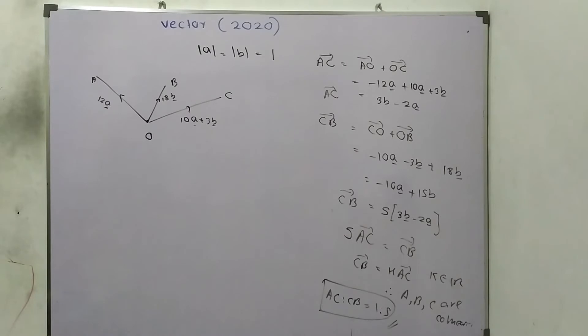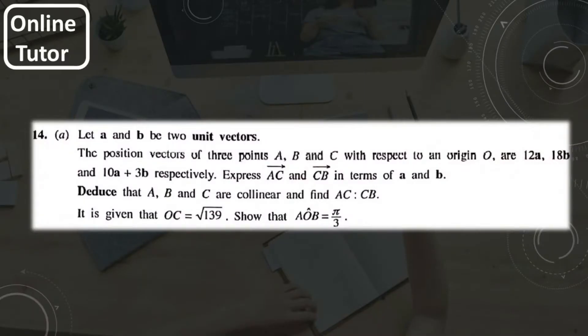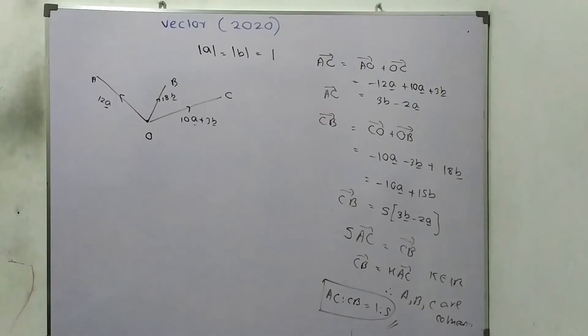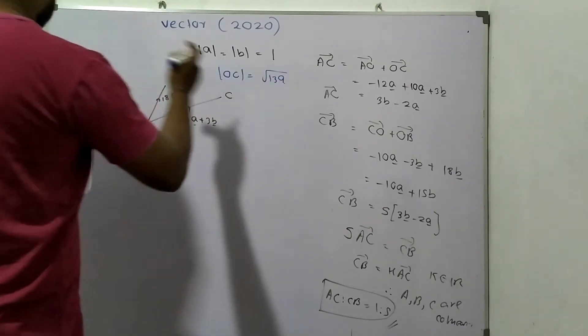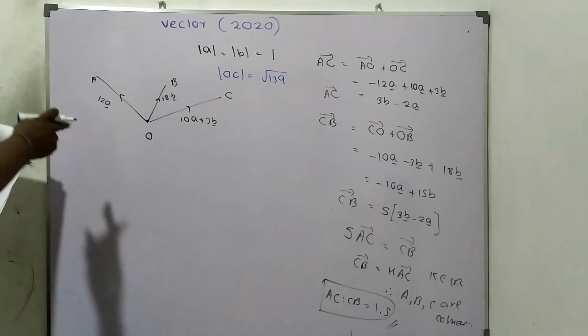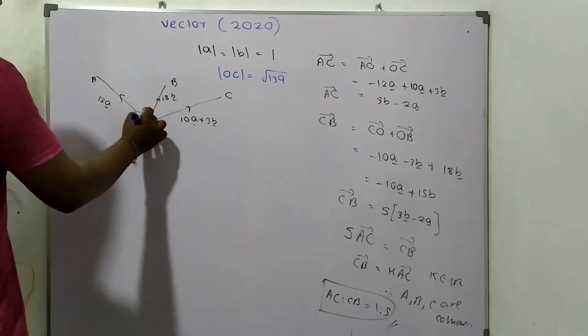The next one: deduce that A, B, C are collinear and find... It is given that modulus OC equals root 139. Show that angle AOB... We need to find this theta.